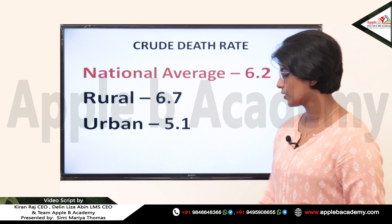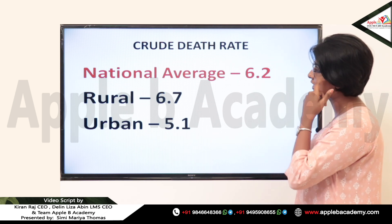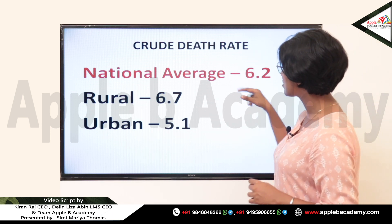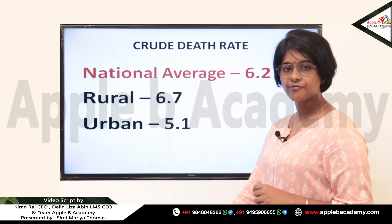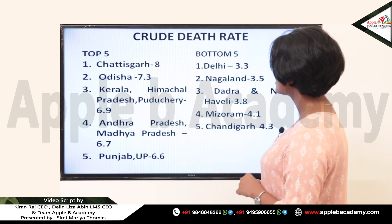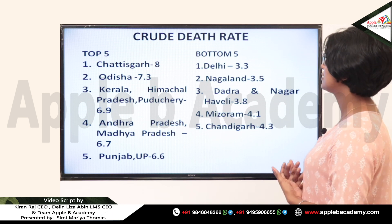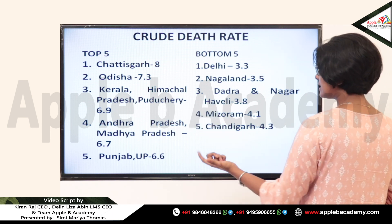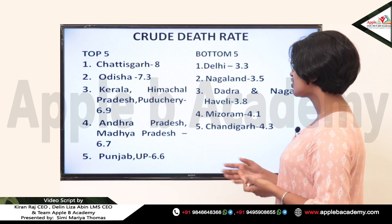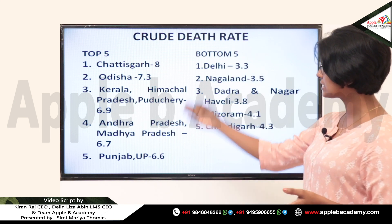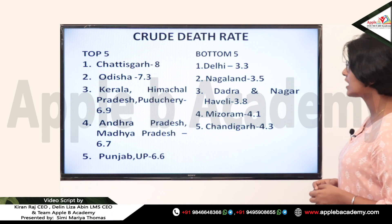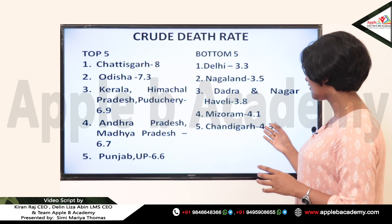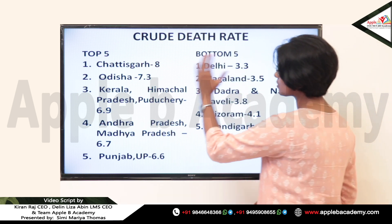Now for crude death rate: the national average is 6.2, rural is 6.7, and urban is 5.1. In the top five states for crude death rate, Chhattisgarh tops the list, followed by Odisha, Kerala, Himachal Pradesh, and Uttarakhand with the same rate, then Andhra Pradesh and Madhya Pradesh at the same rate, and Punjab and UP at the same rate. The bottom five states are Delhi, Nagaland, Dadra and Nagar Haveli, Mizoram, and Chandigarh.